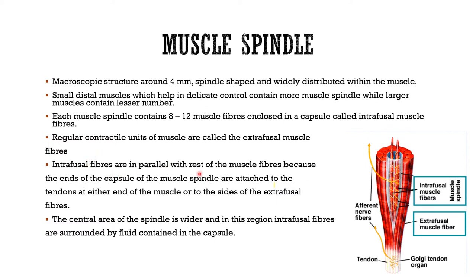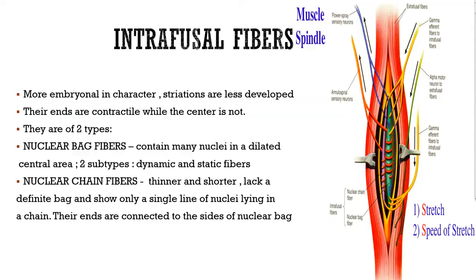Intrafusial muscle fibers lie in parallel with the extrafusial muscle fibers because the ends of the capsule — or muscle spindle — are attached to the tendons on either side. They may also be attached to the sides of extrafusial muscle fibers.